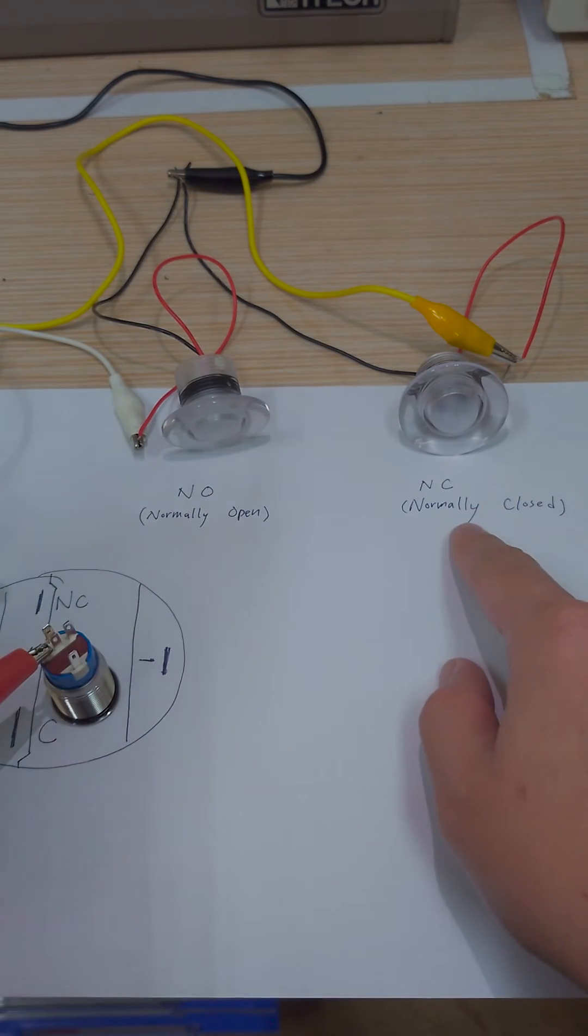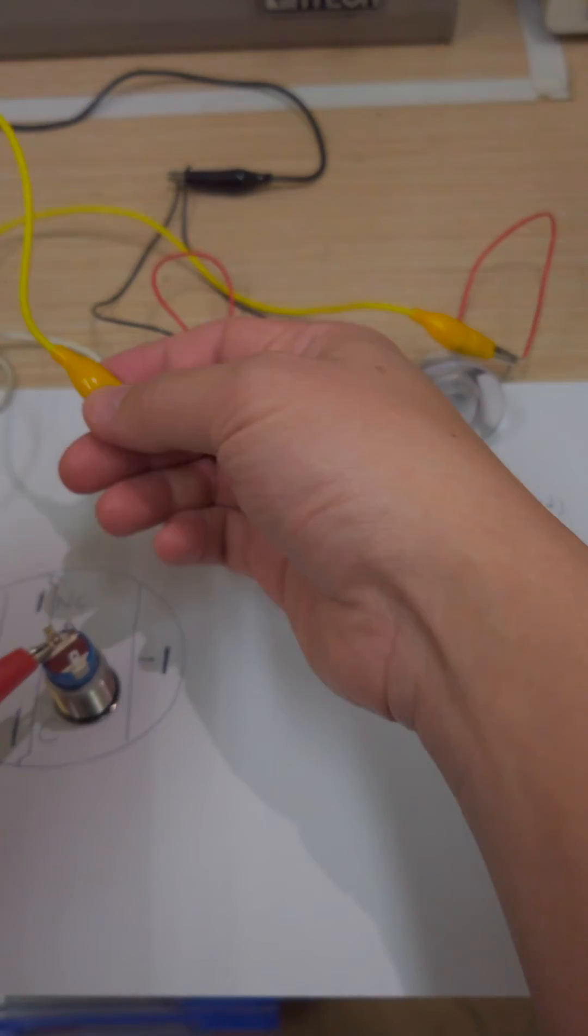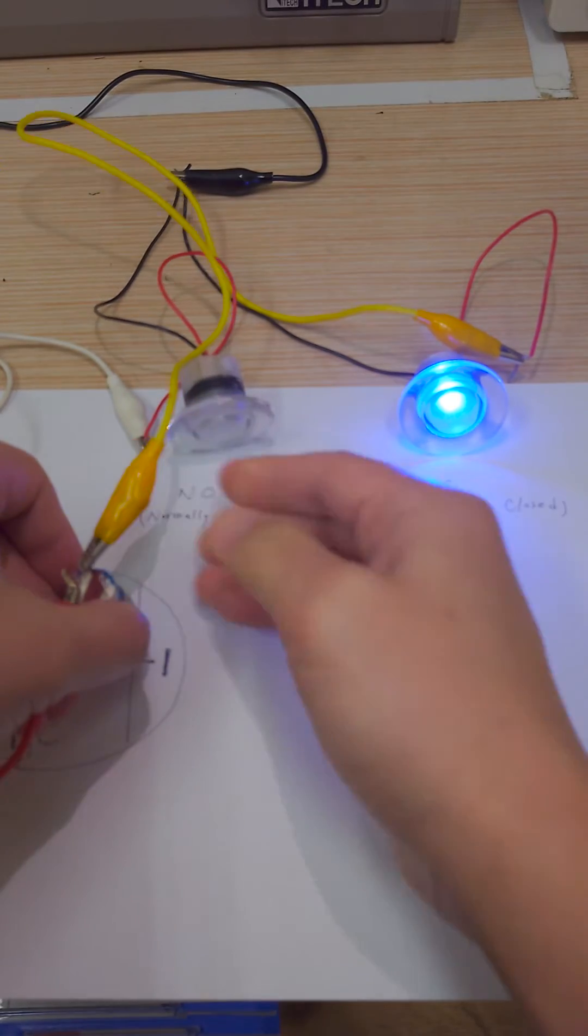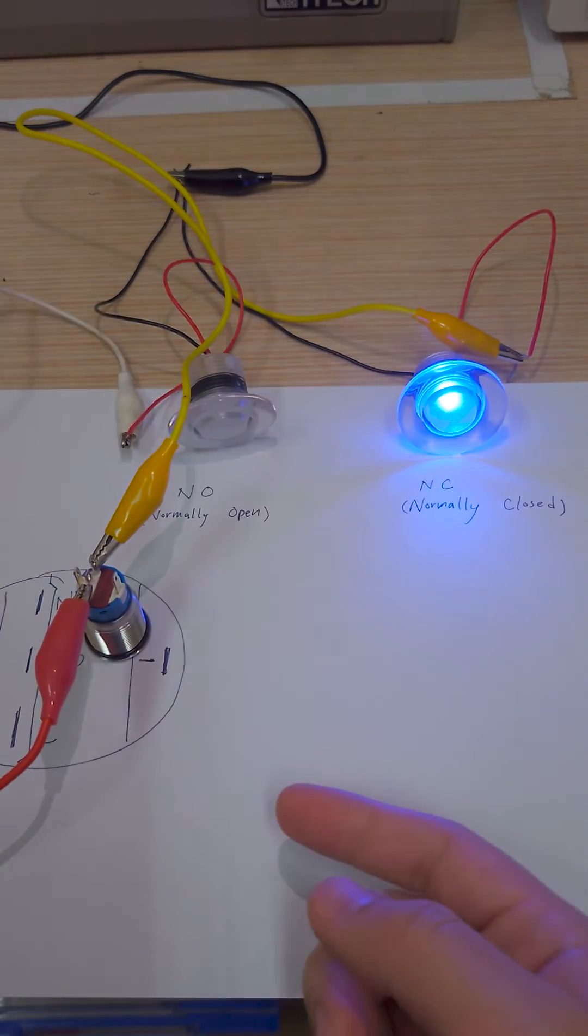This LED represents the normally closed terminal. I will connect this yellow wire to the NC port, and you will see it will light up when the switch is not pressed.